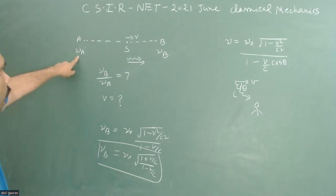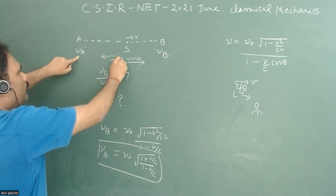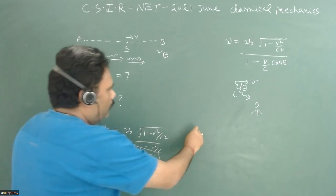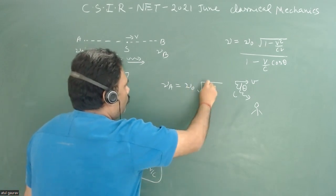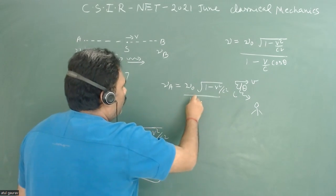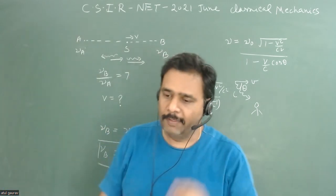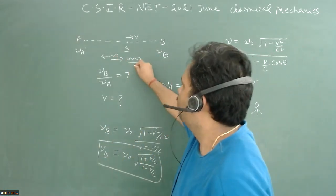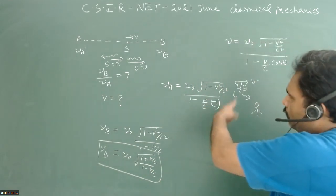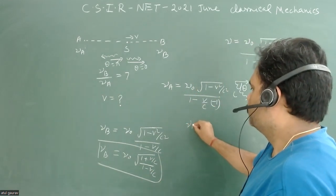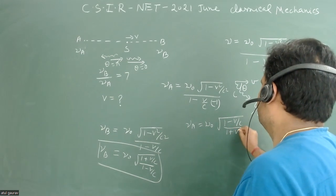For observer A, the light is coming in one direction but the source is moving in the opposite direction, so θ is equal to π. So ν_a = ν₀ · √(1 - v²/c²) / (1 - v/c · cos π), which simplifies to ν₀ · √((1 - v/c) / (1 + v/c)).